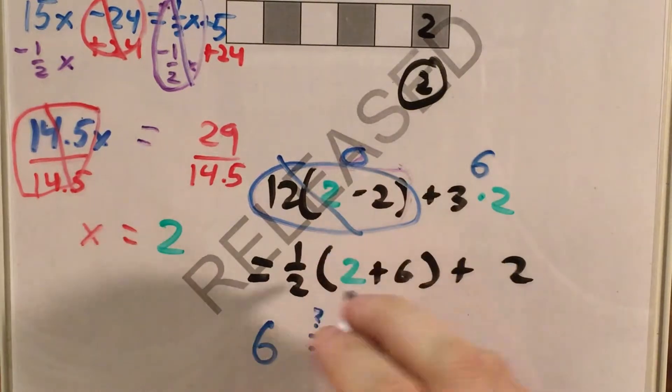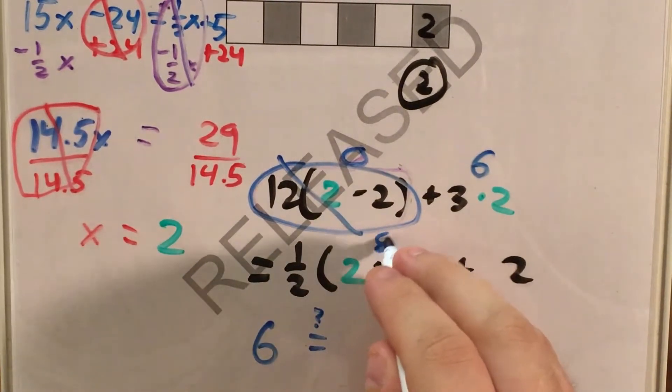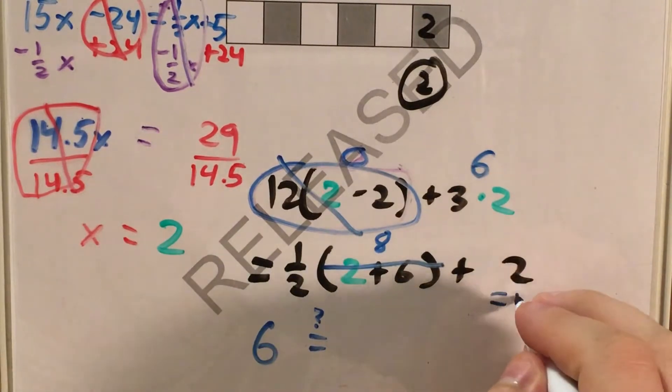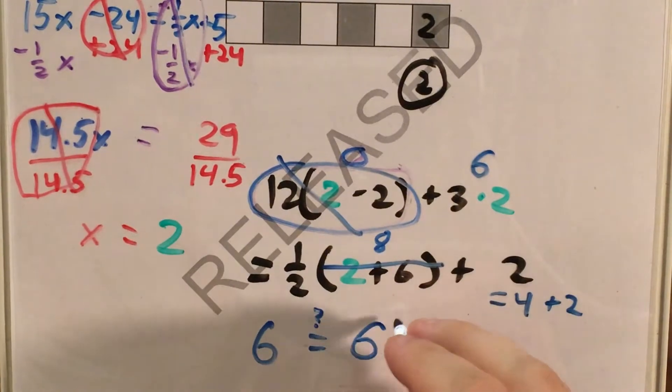And I'm seeing if that equals 1 half times 2 plus 6. 2 plus 6 is 8. 1 half times 8 equals 4. And 4 plus 2 equals 6.